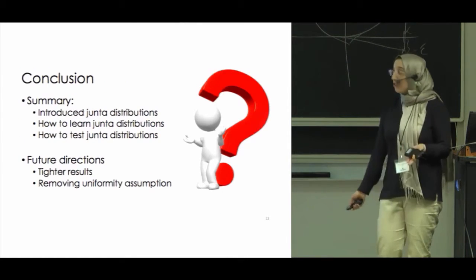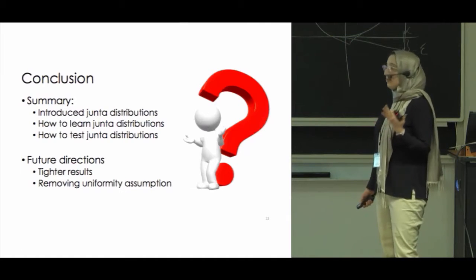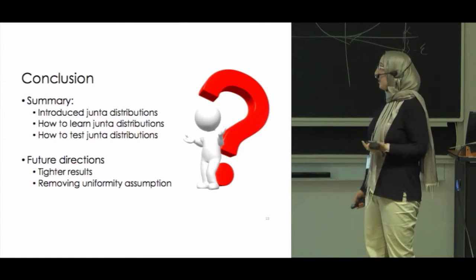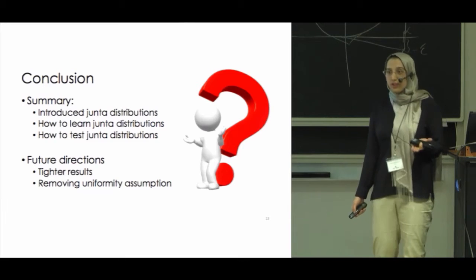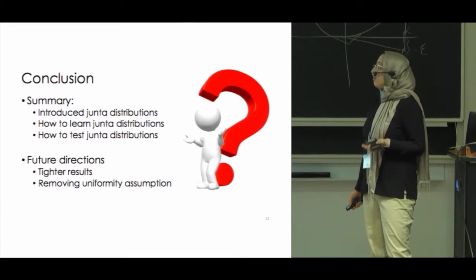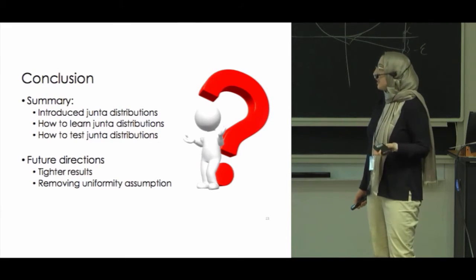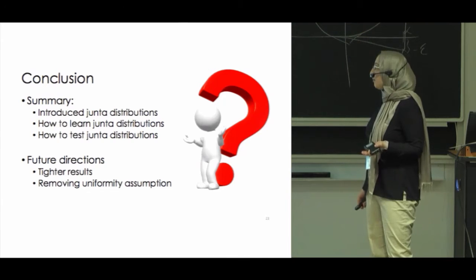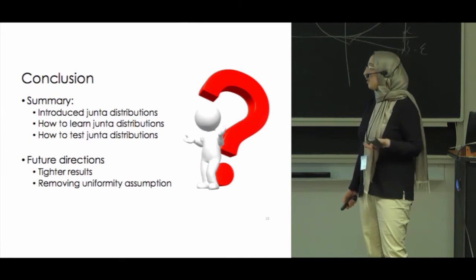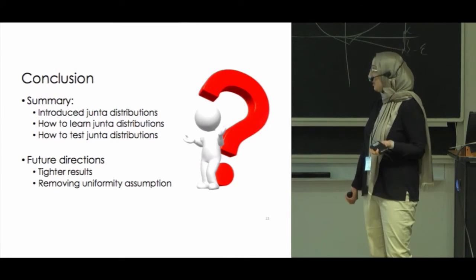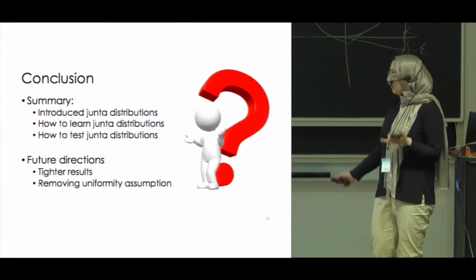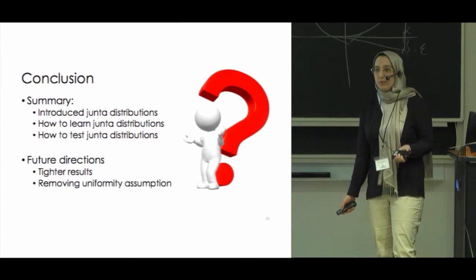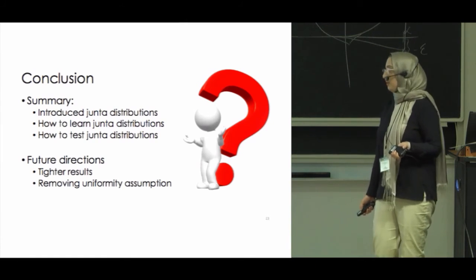To summarize, I covered the definition of junta distributions and both a testing and a learning algorithm. For future directions, one can consider tighter results or remove the uniformity assumption from the beginning. We have some partial results on this and hopefully will publish soon.